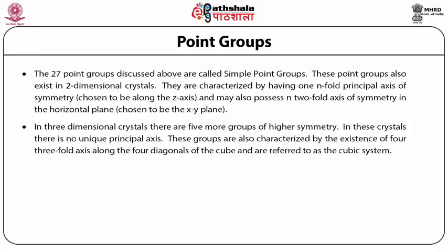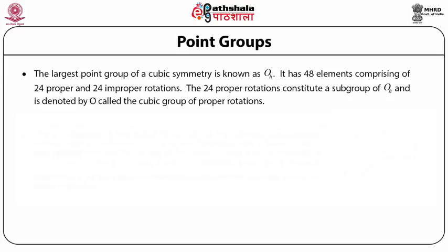In three-dimensional crystals, there are five more groups of higher symmetry. In these crystals there is no unique principal axis — there may be more than one. These groups are characterized by the existence of four three-fold axes along the four diagonals of a cube, and are referred to as the cubic system. The largest point group of cubic symmetry is known as Oₕ, which has 48 elements consisting of 24 proper and 24 improper rotations. The 24 proper rotations constitute a subgroup of Oₕ denoted O, called the cubic group of proper rotations.